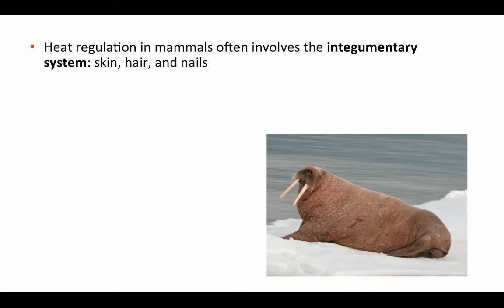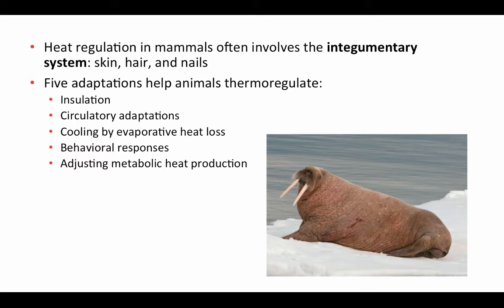Heat regulation in mammals — and birds, adding feathers — often involves the integumentary system. Skin, hair, and nails contribute to thermal regulation as the barrier between the organism and its environment. There are five adaptations that help animals thermoregulate: insulation, circulatory adaptations, cooling by evaporative heat loss, behavioral responses to changing conditions, and adjustments to metabolic heat production. Some apply only to endotherms; others apply equally to endotherms and ectotherms.